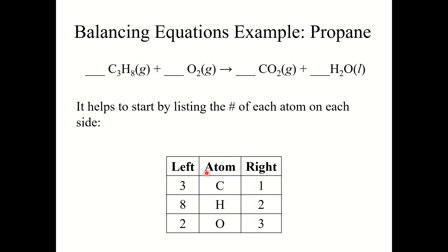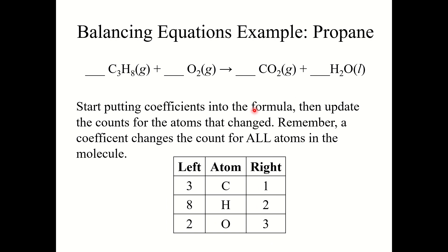Let's make our little table with three atom types: carbon, hydrogen, and oxygen. We've got 3 carbon atoms on the left, 8 hydrogen atoms on the left, 2 oxygen atoms on the left; 1 carbon on the right, 2 hydrogens on the right, and 3 oxygens on the right. I'm going to start by placing a 3 in front of CO2 because I have 3 carbons on the left but only 1 on the right. Now I've got 3 carbon atoms on the right — carbon is balanced — and 7 oxygen atoms on the right. I'll fix oxygen later; first let's tackle water.